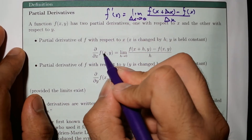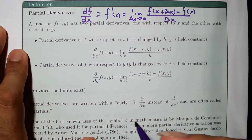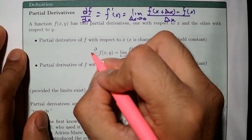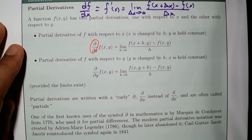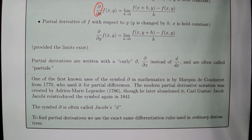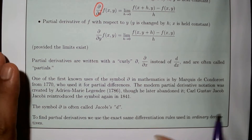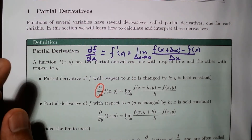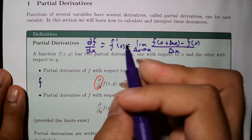In this case we're going to use a different symbol other than df/dx — we're going to use a curly d, also known as Jacobi's d. It's a bit up in the air who introduced the symbol; some say one mathematician, others say Jacobi, but we call it Jacobi's d.